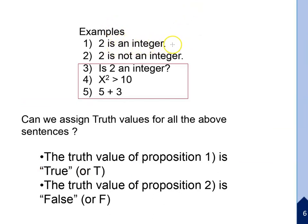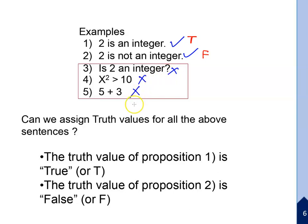Here is an example: '2 is not an integer' — this is a proposition, and its truth value is false.